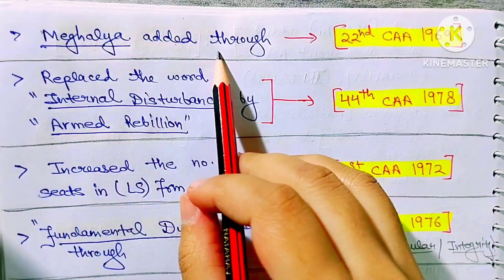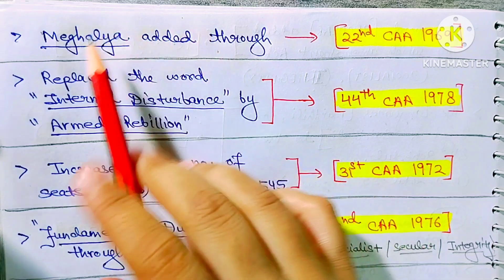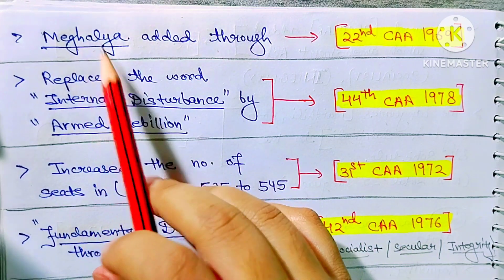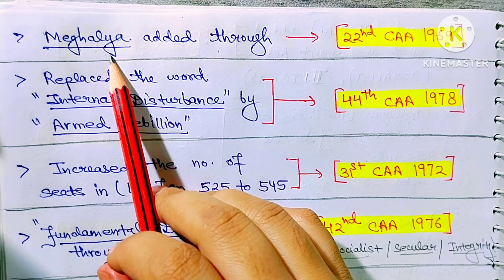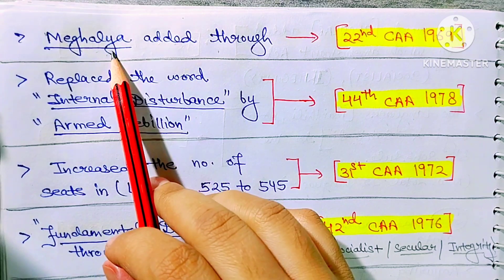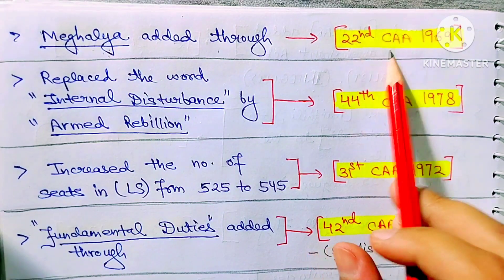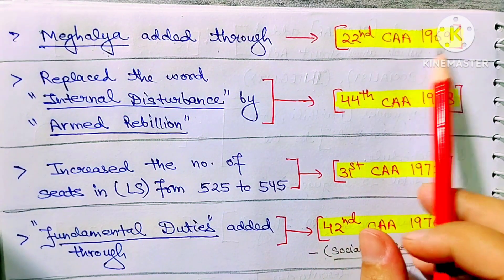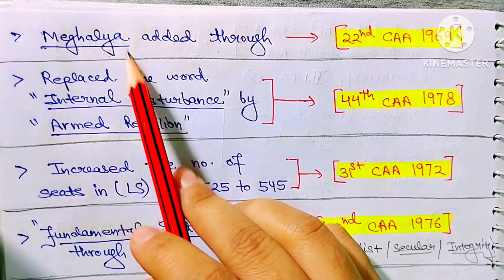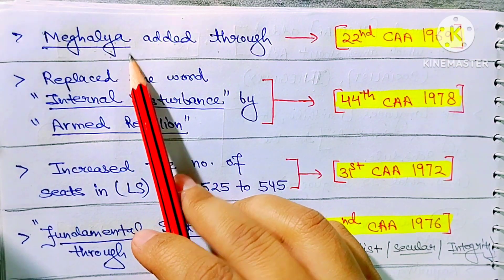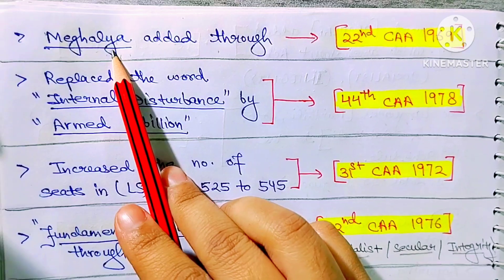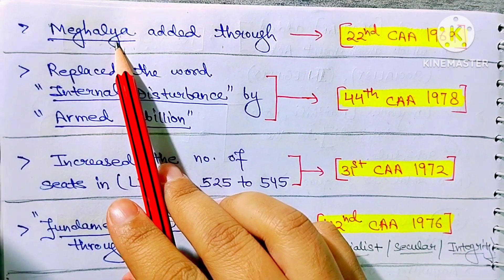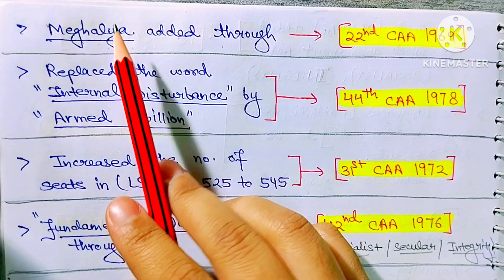Next: Meghalaya was added as a state in India through the 22nd Amendment Act 1969. Meghalaya was given statehood — that is, it was made a state of India — through this amendment act.